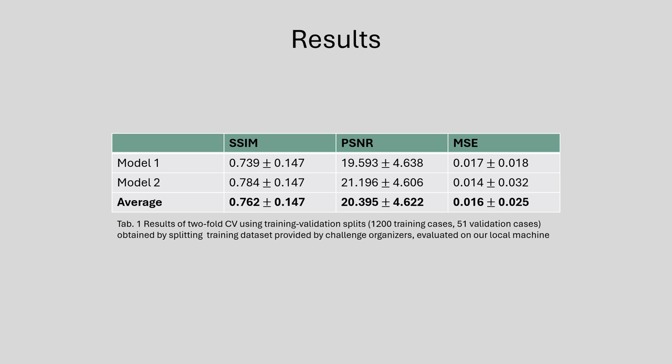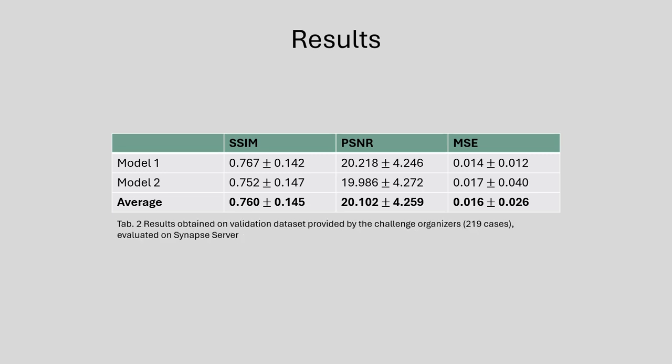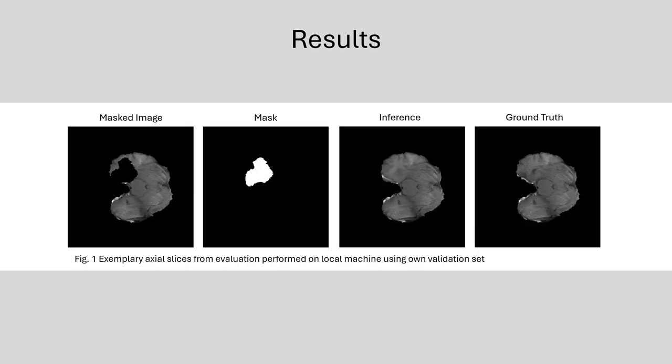We split the training dataset provided by the organizers to perform a two-fold cross-validation on our local machine. This table shows the SSIM, PSNR, and MSC scores we obtained using the evaluation script provided by the organizers. In addition, a separate validation set was provided by the organizers, and the calculation of the scores was performed on the Synapse server. We have to mention that the scores are not as good as we expected after our experiments with the pseudo-3D DDM before this challenge, as we explored a slightly different pre-processing for this challenge submission.